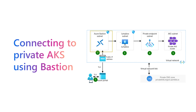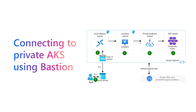Azure Bastion is injected into the virtual network so it can access that virtual machine. Azure Bastion is accessible to the end user through a public IP address, and the communication goes through TLS — encrypted with HTTPS. So the user's laptop connects via TLS to Azure Bastion's public IP, then connects to the jump box VM, and from there connects to the private AKS cluster through the private endpoint.